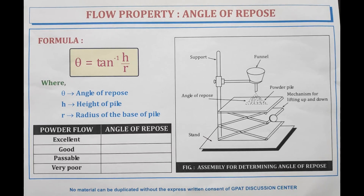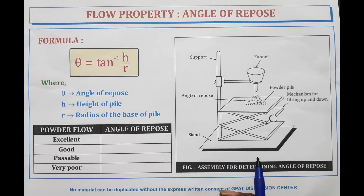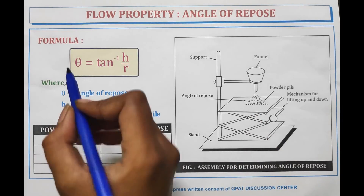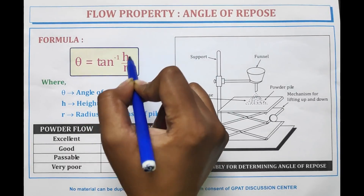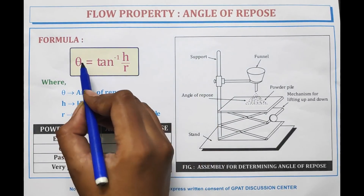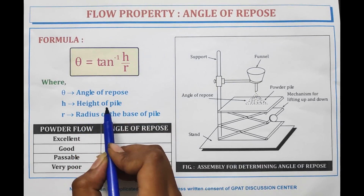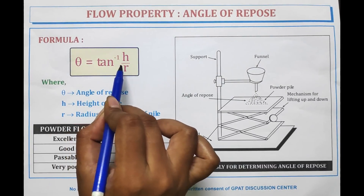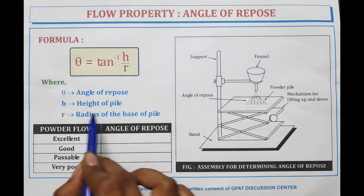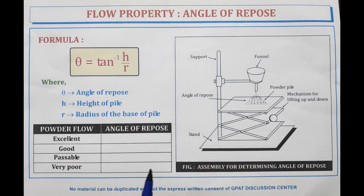We can measure the flow property of powder by the angle of repose. This is a method in which we measure the flow property. The formula used is: theta equals tan inverse of h over r, where theta is the angle of repose, h is the height of the pile, and r is the radius of the base of the pile.